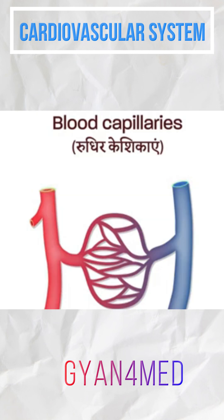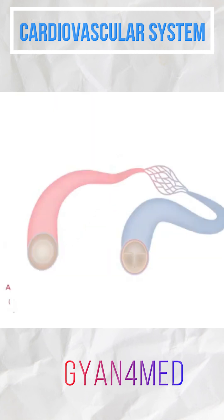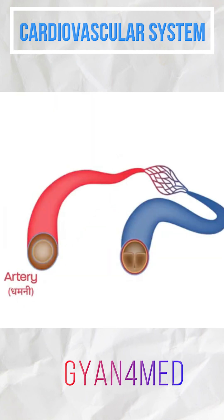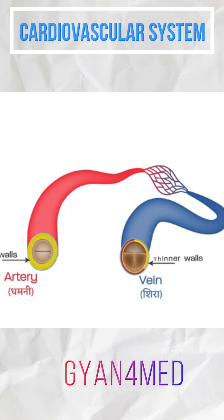Arterioles are smaller blood vessels that branch out from larger arteries and lead to the arterial capillaries. The arterial capillaries are connected to the venous capillaries. The blood flow from the venous capillaries will flow back from the body to the heart through the venous blood vessels.